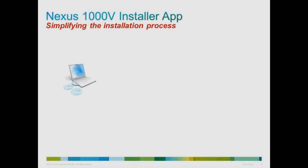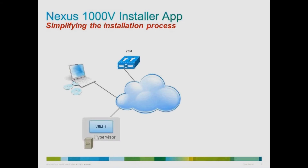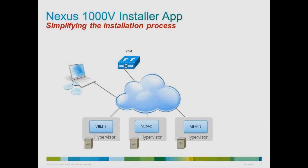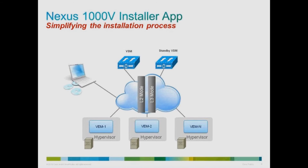The installer app provides the option of installing the VSM and VEMs at the same time or at different times. As you are already aware, the Nexus 1000v supports full fault tolerance by providing redundancy at the VSM level. By using the installer app, the user will also have the ability to deploy the standby VSM at the same time as configuring the active VSM,